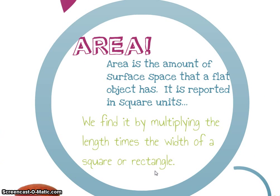Okay, so that was perimeter. Now we're going to talk about area. Area is the amount of surface space that a flat object has. The important thing to think about with this is it's reported in square units. We simply find it by multiplying the length times the width of a square or a rectangle.